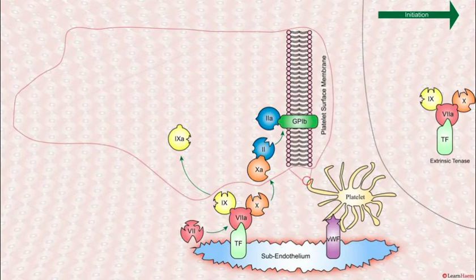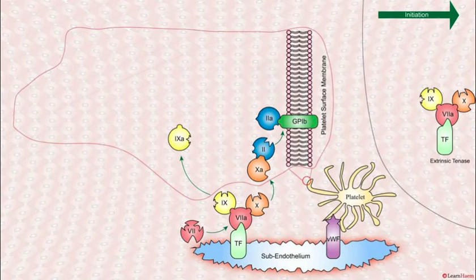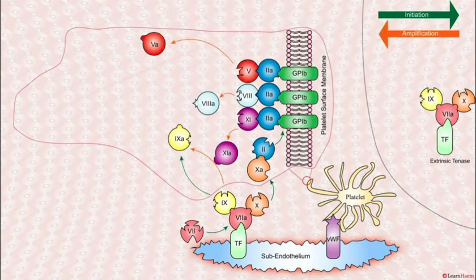Thrombin itself is also involved in a lot of crosstalk. It's going to bind to these platelet receptors and further activate other clotting factors, including factor 11, factor 8, and factor 5.